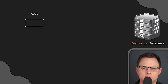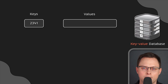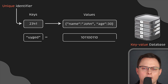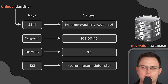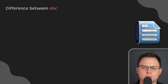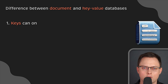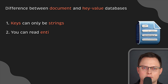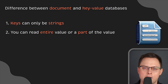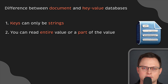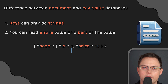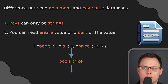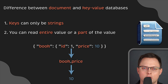A key-value database stores data as a collection of key-value pairs, where a key serves as a unique identifier. Both keys and values can be anything, ranging from simple objects to complex compound objects. The document database is a special type of key-value store where keys can only be strings. When querying a document store, you can read the entire value or a part of the value, especially if the value is another JSON object — for example, book ID 1 and price $10, then query book price and the database returns the value 10. Key-value databases always return the whole value, including both ID and price information.